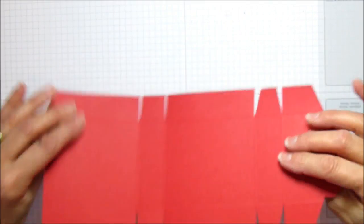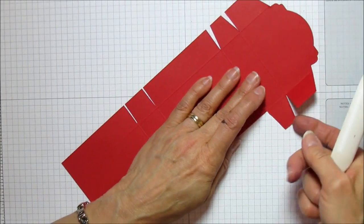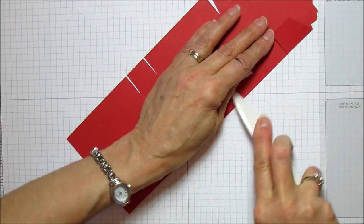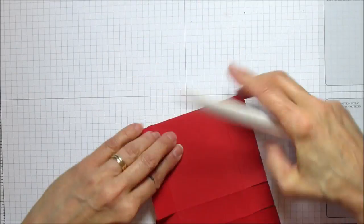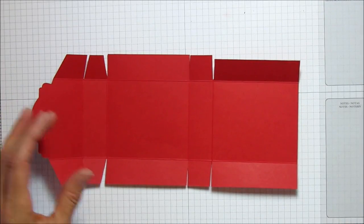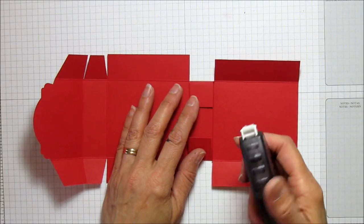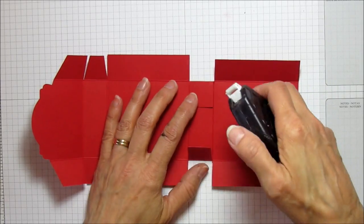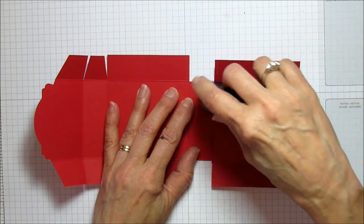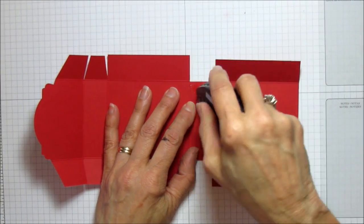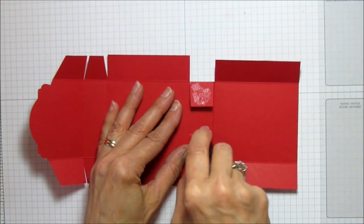Now we're ready to put it together. Let me get my bone folder and sharpen all these score marks like we normally do because you'll want a nice clean crisp box. I'm going to use fast fuse on this. The fast fuse holds these boxes really well.